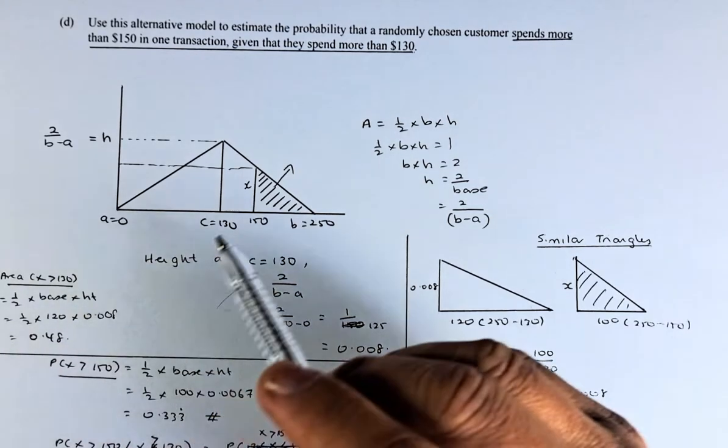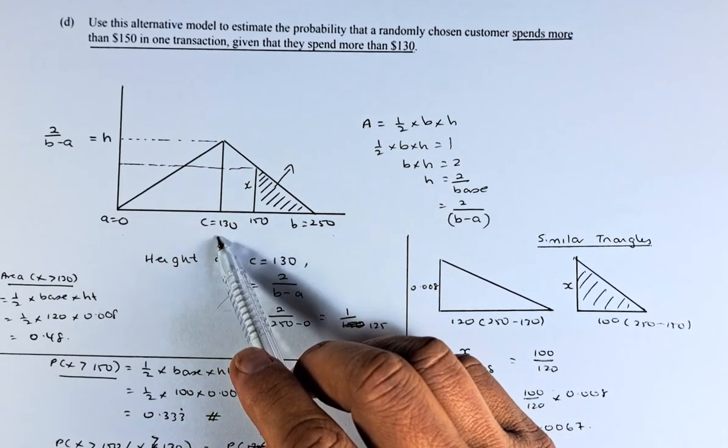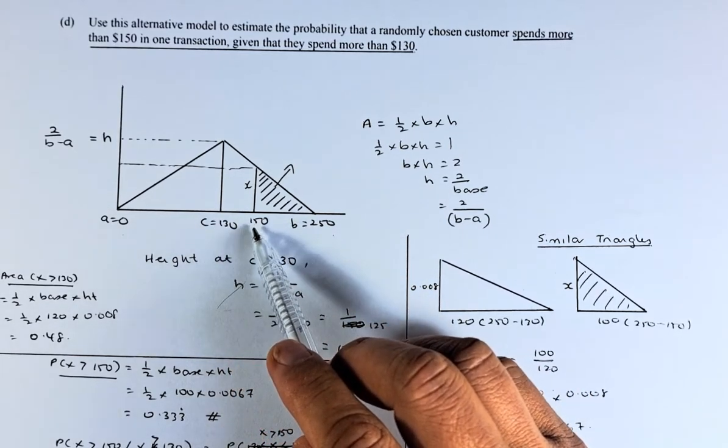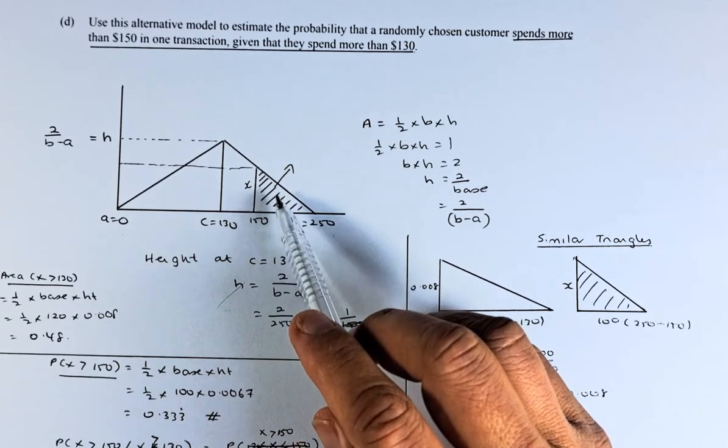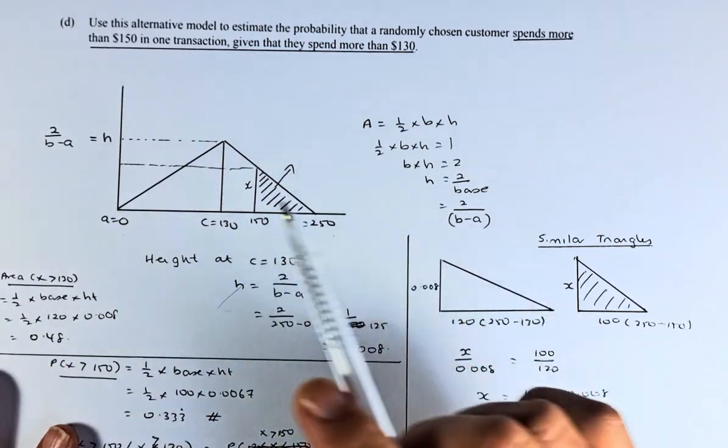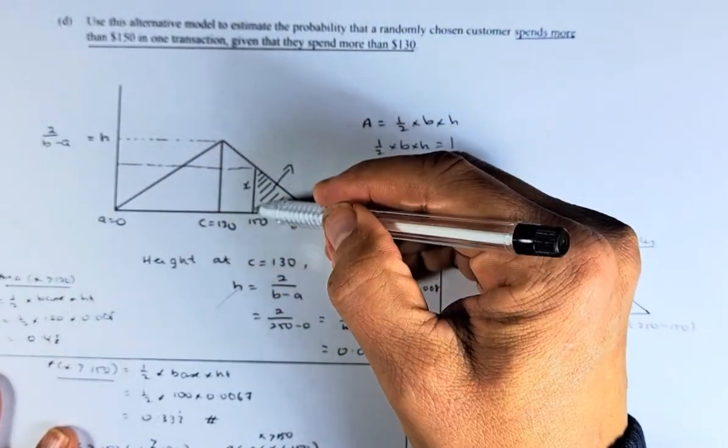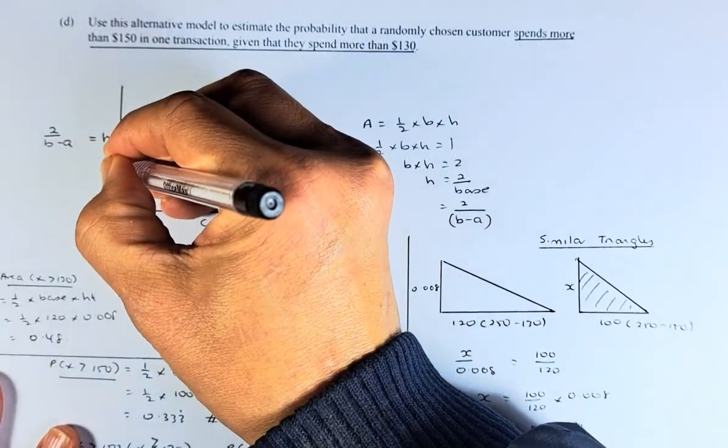We will come back to that later, but before that, we need to find the area here. This area here is the probability that it spends more than $1.50. To do that, we have drawn the diagram. A is 0, B is $2.50, C is the most common at $1.30. We need to know what is the amount spent that is more than $1.50. To do that, we have to draw this triangular distribution and we need to calculate the height here at C and also at this point here, x.